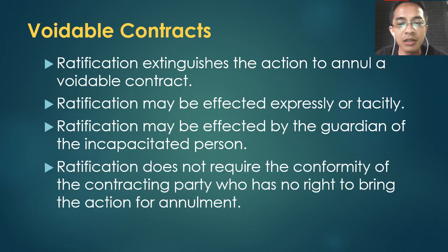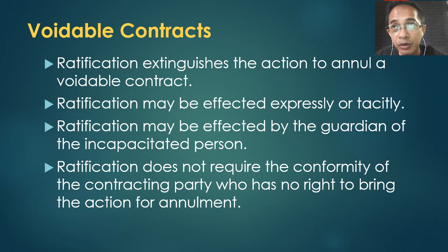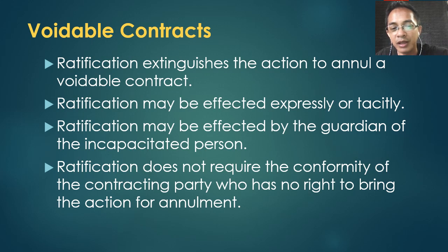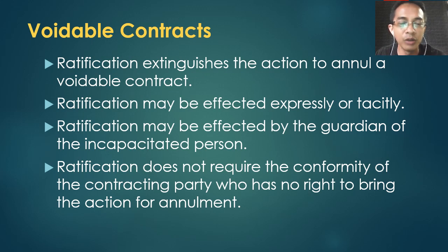Ratification does not require the conformity of the other party. So when the minor grows up or the insane person recovers and ratifies, the other party's agreement is not needed. Even if the other party objects, the ratification is valid — because the other party is the adult with capacity who has no right to complain.